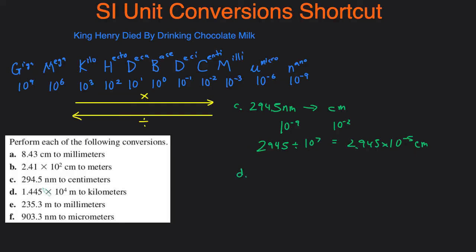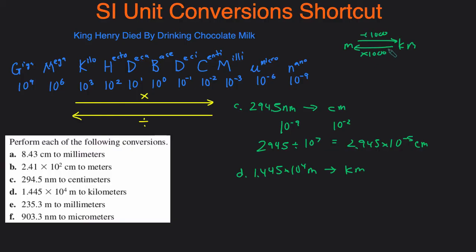In part D, we're going from 1.445 times 10 to the 4th meters and converting to kilometers. Going from meters to kilometers, you divide by 1000, and going from kilometers back to meters you multiply by 1000. This applies to grams and kilograms as well — anytime you go from a base unit toward kilo, divide by 1000. So we divide by 1000 and get 1.445 times 10 to the 1 kilometers.